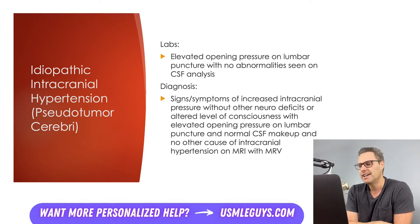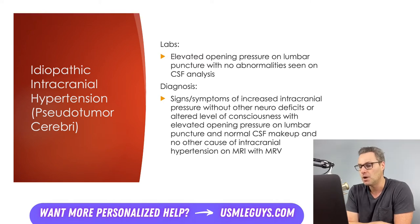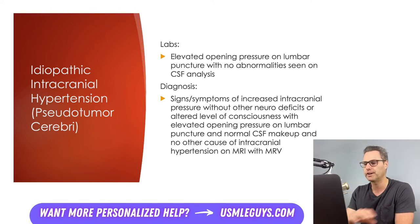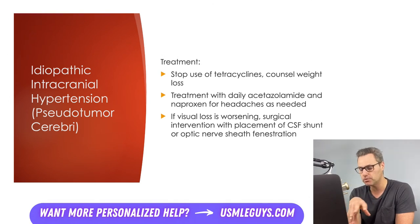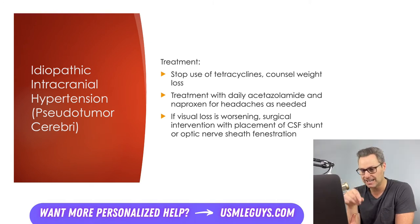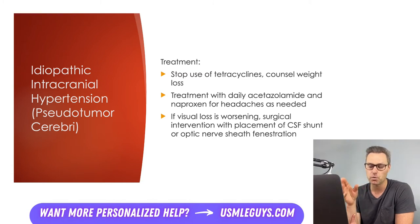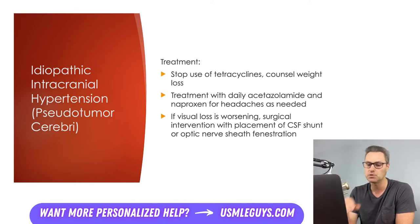Diagnosis is made based on signs and symptoms of increased intracranial pressure without other neurodeficits or altered consciousness, with an elevated opening pressure on LP but normal CSF, and no other cause of intracranial hypertension on MRI with MRV. Treatment includes stopping tetracyclines if being used, counseling on weight loss, daily acetazolamide, and naproxen as needed for headaches. If visual loss is severe or worsening, surgical intervention with CSF shunt placement or optic nerve sheath fenestration is warranted.